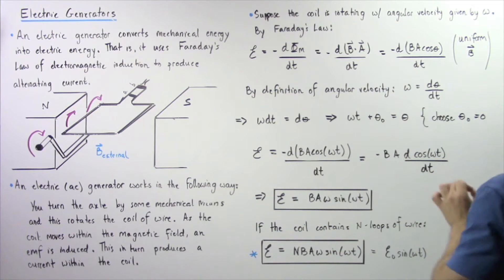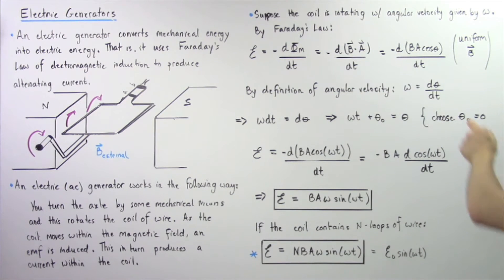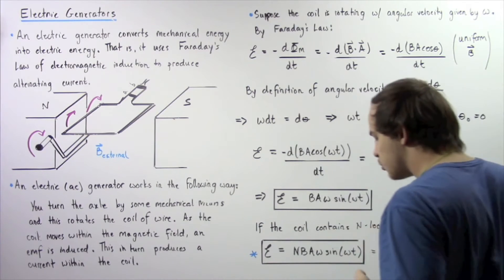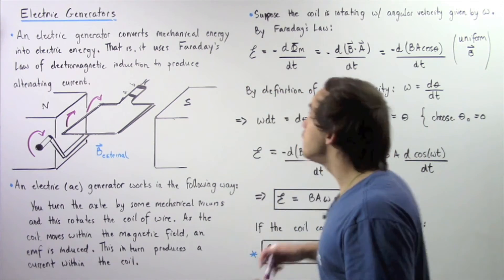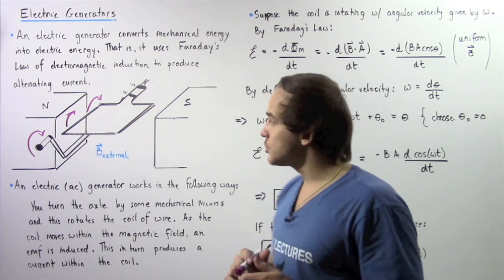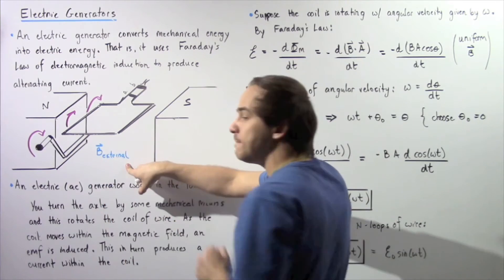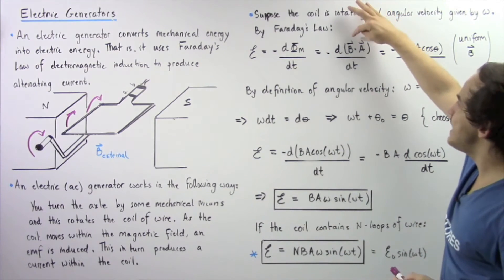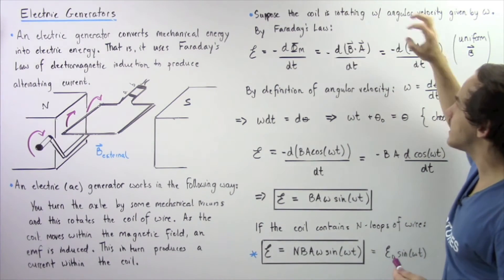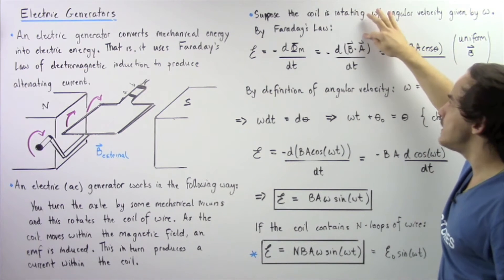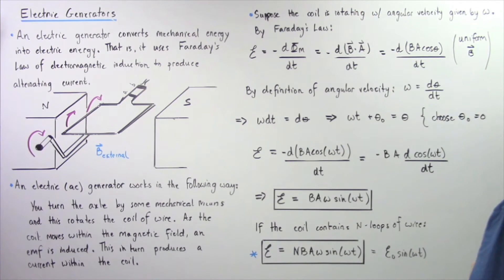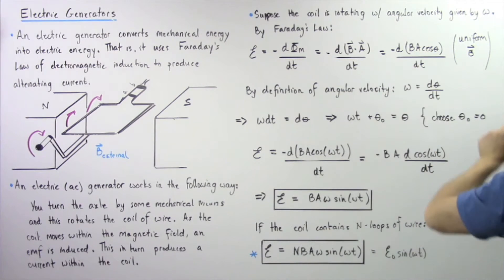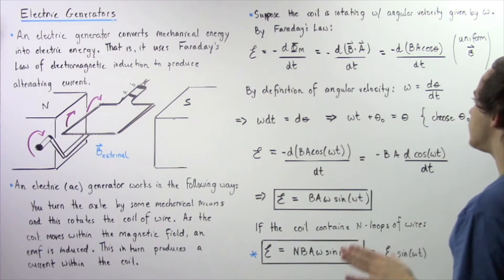Suppose the coil is rotating with angular velocity omega. By Faraday's Law, the induced EMF is equal to the negative of the rate of change of magnetic flux with respect to time. Assuming the external magnetic field is uniform and constant, the magnetic flux is simply the dot product of the magnetic field vector and the area vector, which equals B·A·cos(θ), where θ is the angle between the magnetic field vector and the area vector.